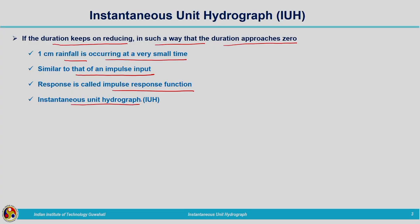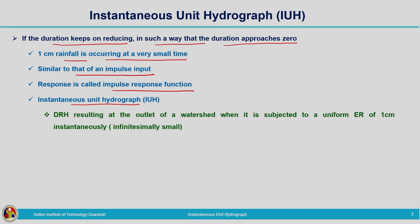This we have already discussed while discussing linear system theory. From the catchment point of view, if 1 centimeter of rainfall acts on the catchment for a very short interval of time, the response or direct runoff produced at the outlet of the catchment is the impulse response function — that is nothing but the instantaneous unit hydrograph. This is a fictitious concept; in actual conditions, this is not possible.